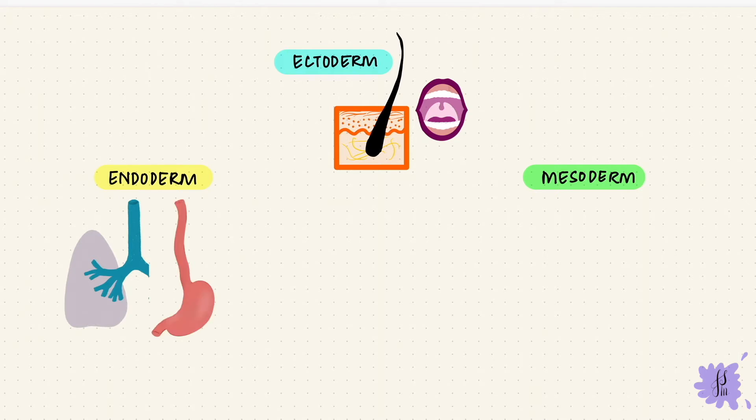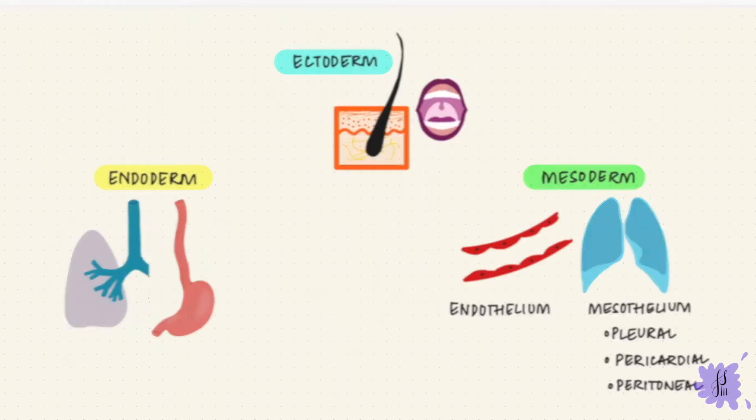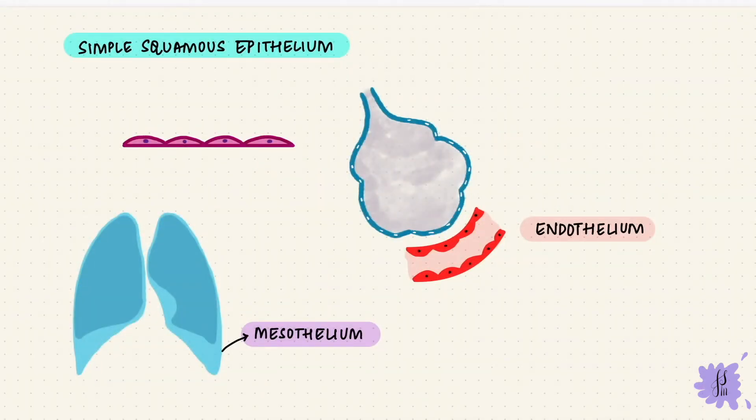The endothelium in blood vessels and the mesothelium, they are mesodermal. So the mesothelium is mesodermal in origin and lines the serous membranes like the pleural, the pericardial, and the peritoneal cavities. And that is simple squamous epithelium.